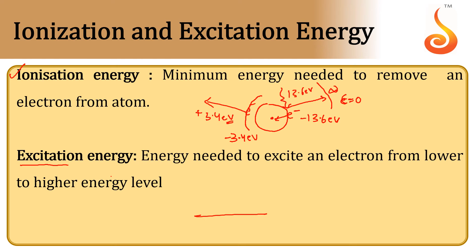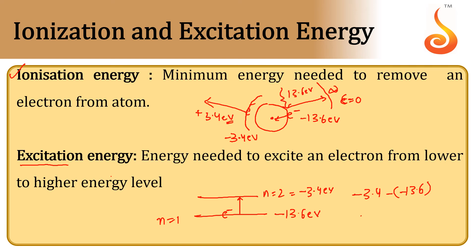For example, if an electron is in the ground state of hydrogen, which is minus 13.6 electron volts (n = 1), and I want to make a transition from the ground state to the higher state n = 2, the energy of the electron in the second state will be minus 3.4 electron volts. So the amount of energy to provide is minus 3.4 minus of minus 13.6, which equals plus 10.2 electron volts. This energy is called excitation energy.